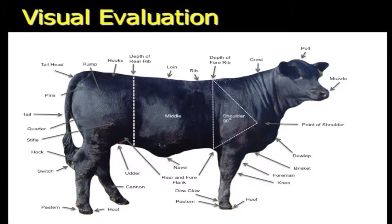We hit on visual evaluation some already but I want to put this picture up here and give you some key points. We've seen a similar picture when we were talking about bull selection. You can see we're looking at depth of body and shape of rib. We want heifers that have got some muscle to them, but they need a longer pattern kind of a muscle. They don't look very round in their muscle type.